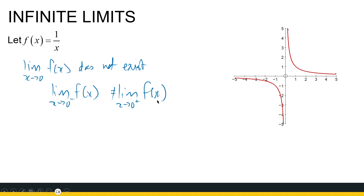What we need to recognize is it's important to see what happens to the function as x approaches zero from the left and from the right. If we want to talk about the behavior of the graph or sketch it, it's not sufficient just to say the limit doesn't exist. With more complex examples, this information becomes more valuable.